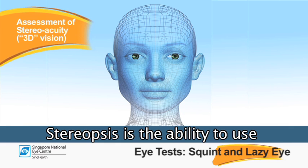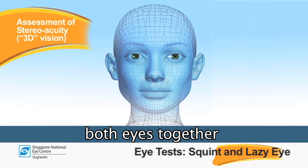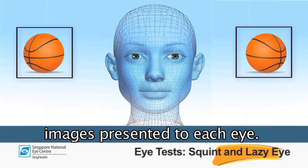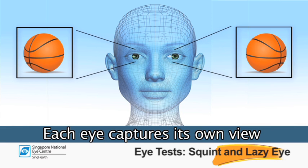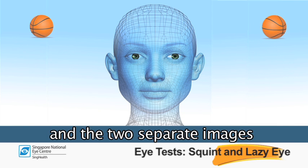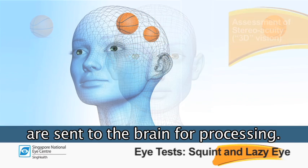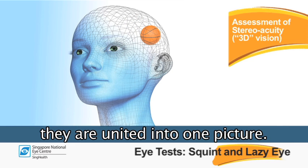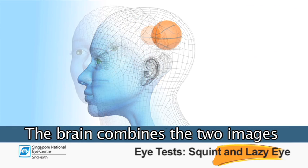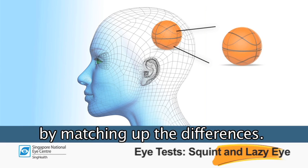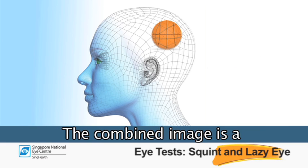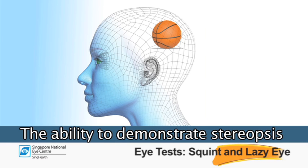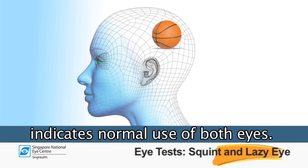Stereopsis is the ability to use both eyes together to appreciate depth. The test involves slightly different images presented to each eye. Each eye captures its own view and the two separate images are sent to the brain for processing. When the two images reach the back of the brain, they are united into one picture, combining the differences into a three-dimensional stereo image. The ability to demonstrate stereopsis indicates normal use of both eyes.